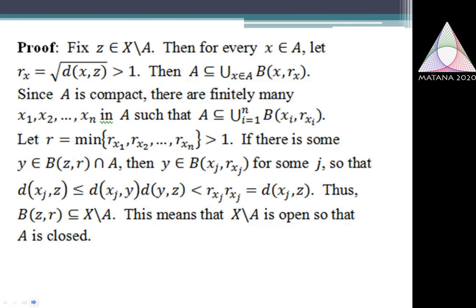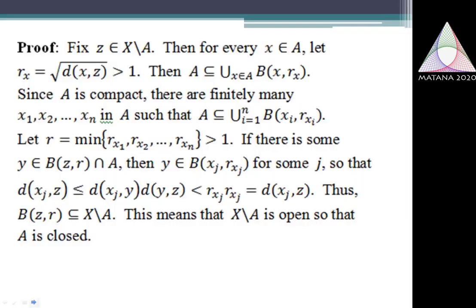Suppose one point Y is in the intersection of A and B(Z, R). Then D(Z, Y) is strictly less than R, and by using the triangle-type inequality I have the conclusion that D(x_j, Z) is strictly less than D(x_j, Z), which is an obvious contradiction — saying one number is strictly less than the same number is absurd. So we have a contradiction, and necessarily we cannot have any member Y in the intersection of A and B(Z, R). So B(Z, R) is contained in the complement of A.